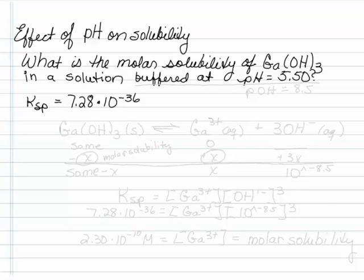This is how to determine the effect of pH on the solubility of the material. What is the molar solubility of Ga(OH)3 in a solution buffered at pH 5.5? We're given the Ksp.